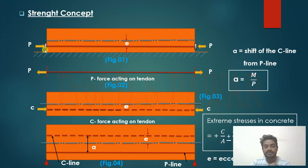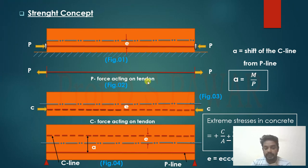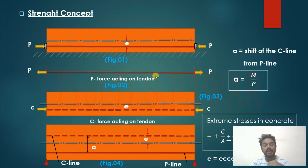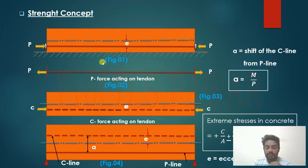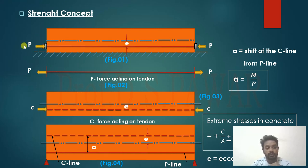Suppose I press the beam exactly on a flat ground and apply forces through the tendon. The C-line — the concrete line — and the P force line: remember, the P-line is the line of the tendon force, and the C-line is where the concrete stresses develop. When the beam is simply laid on the ground without any external forces and the self-weight is not acting, the P-line and C-line coincide with each other. The action line of the concrete and the tendon line will be the same.